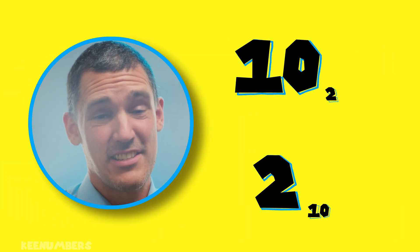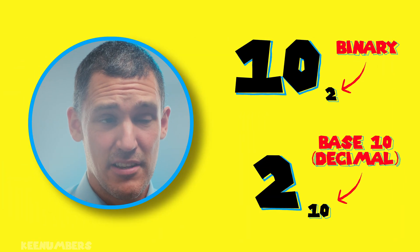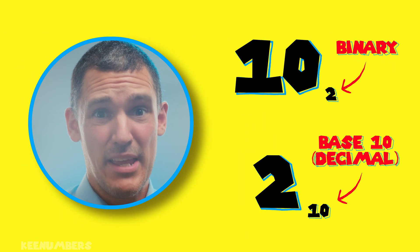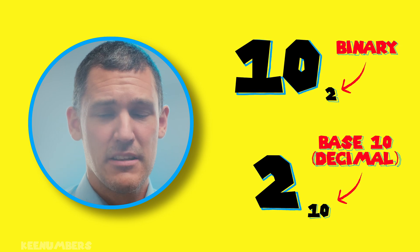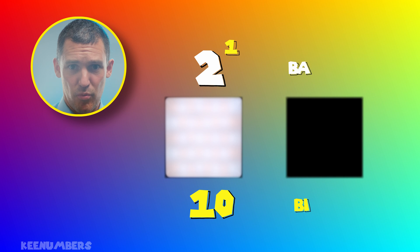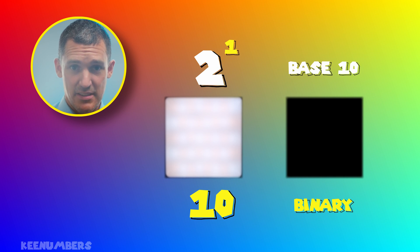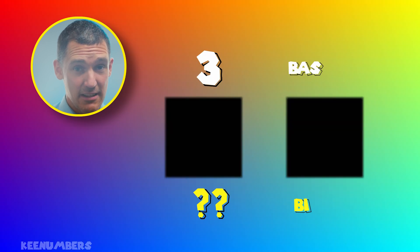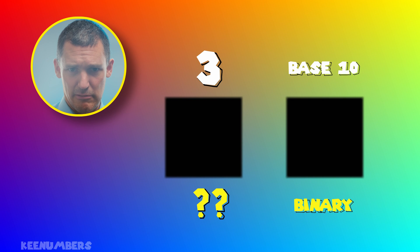10 in binary is the same thing as 2 in base 10. You turn on this light bulb and that means you're using 2 to the 1, or 2 in base 10. Think of binary as being on or off. That means 3 in base 10 — what does that look like in binary? Well, you're going to need both lights on.